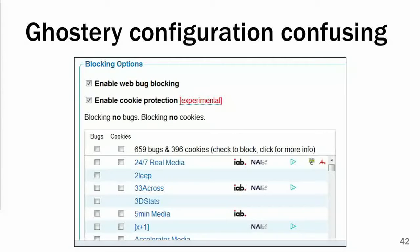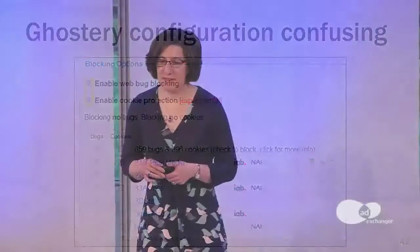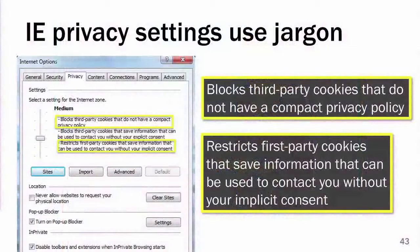We also tested tools like Ghostery to see how well consumers could use them — this is Ghostery as of about five years ago. People said it was really difficult to configure: do you want to enable web bug blocking, enable cookie protection? They weren't quite sure what those things are. Bugs, cookies, too many check boxes. And then again, here's this list of all of these advertising companies they'd never heard of and don't know how to make decisions about. The latest version of Ghostery has a lot less jargon, but there still is this list of companies. With Internet Explorer, we had people try to use their web browser to protect their privacy — again, lots of jargon: third-party cookies, compact privacy policy, first-party cookies, 'contact you without your implicit consent.' These are all phrases that people looked at and said, 'I don't know what this means.'